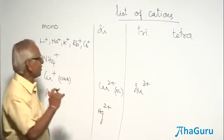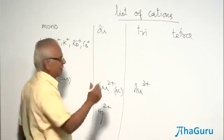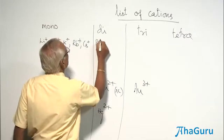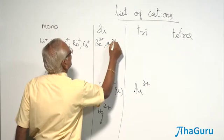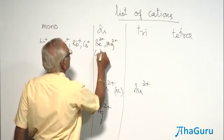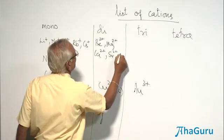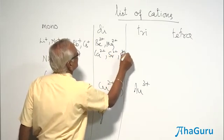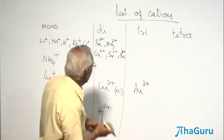Let us see the other divalent compounds. All alkaline earth metals - what are they? Beryllium, magnesium, calcium, strontium, and barium. Ba2+.